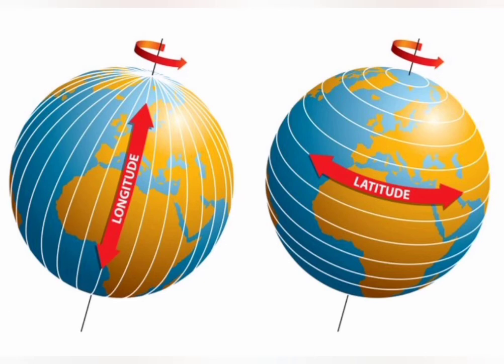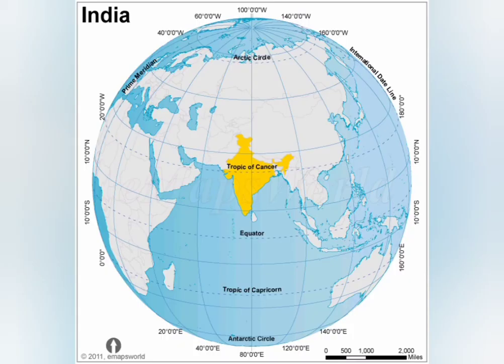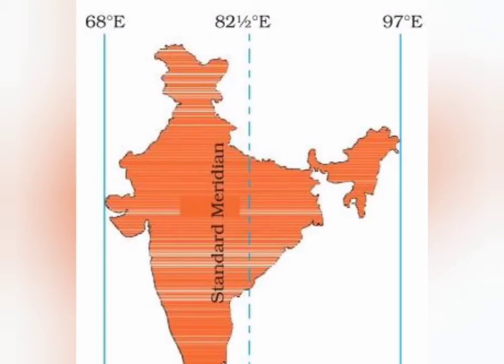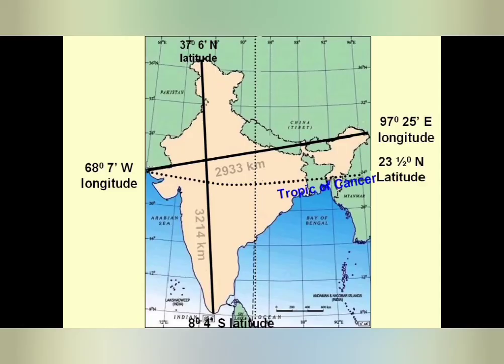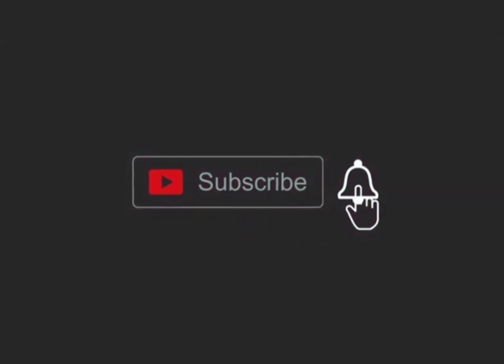Using these imaginary lines of latitudes and longitudes, we can locate India on the globe. The country India is situated north of the equator, between 8°4' North to 37°6' North latitude, and 68°7' East to 97°25' East longitude.